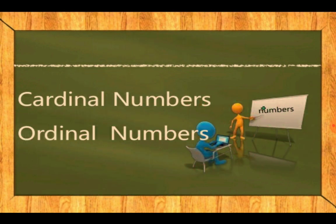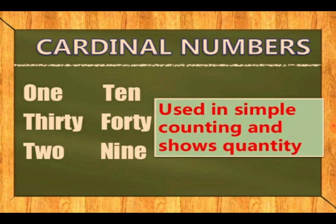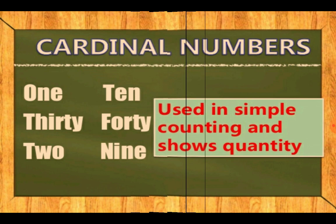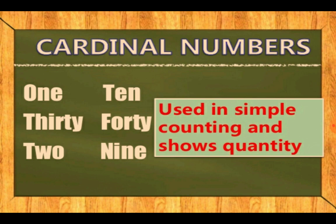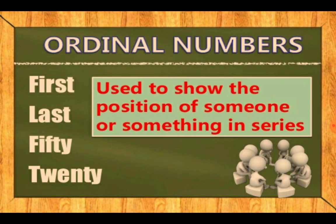Next are cardinal and ordinal numbers. Cardinal numbers are simple counting numbers — one, two, thirty — showing simple quantity. Ordinal numbers show position — first, second, third, last. If a word shows the quantity of a noun, it is a cardinal number; if it shows the position of a noun, it is an ordinal number. I hope you understand the difference between cardinal and ordinal numbers.